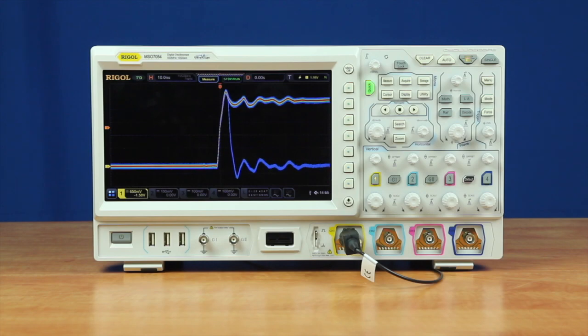Pass-fail testing is a tried and true method of signal analysis. The 7000 series makes pass-fail analysis faster and easier thanks to the processing capabilities of the UltraVision 2 architecture.